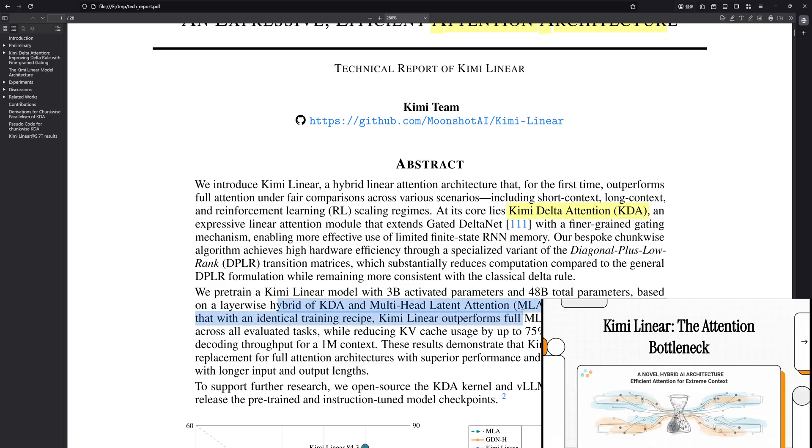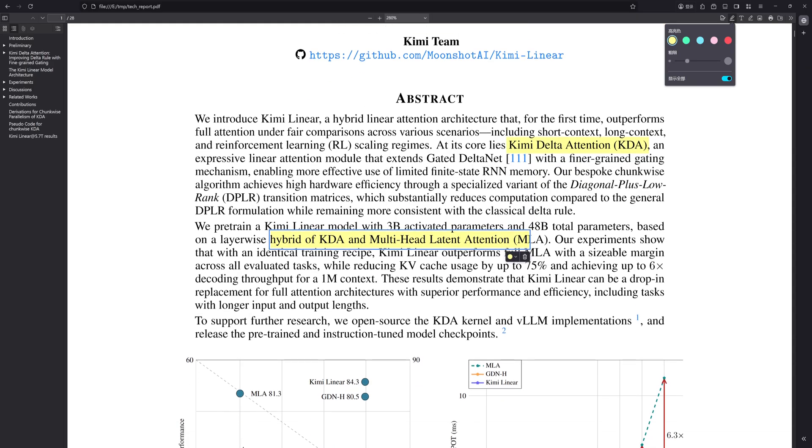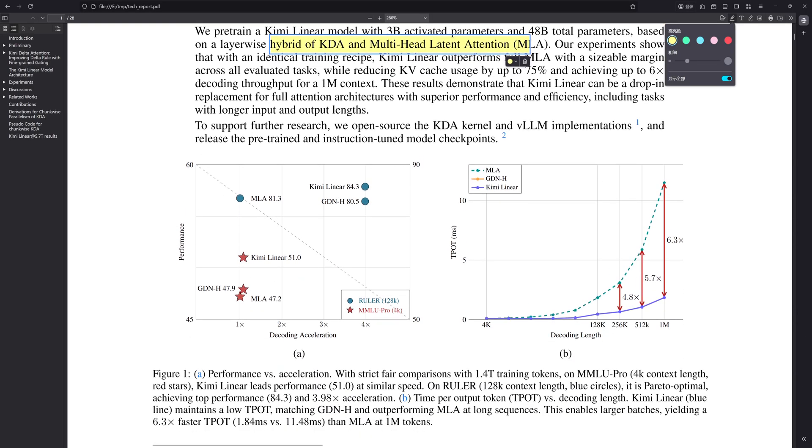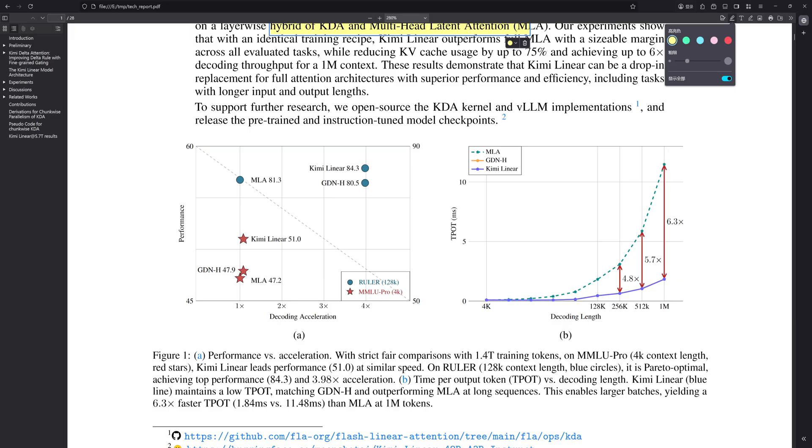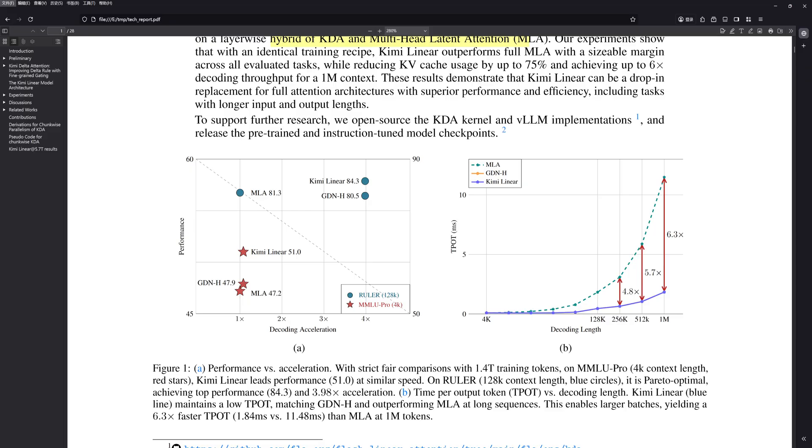Exactly. And its success really forces us to ask a fundamental question. Does this Kimi Delta Attention, the KDA part, actually overcome the inherent expressivity limits and finite state problems that have always plagued linear attention through its specific design, the fine-grained gating, the special update rule? Or is the really impressive performance mostly down to the fact that it's a hybrid, that three-to-one KDA to MLA ratio is key, and maybe just some incredibly clever hardware-focused engineering?